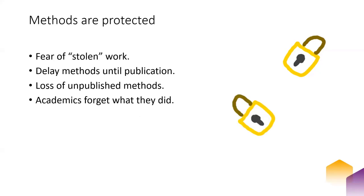Academics are often very protective of the methods they use in research until that research is published. Researchers may keep their methods secret out of fear that somebody else could steal their work. Methods may intentionally be simplified so a researcher can apply them to upcoming work. We also lose all unpublished methods, and academics may simply not remember their methods at the time of writing up due to poor note taking.